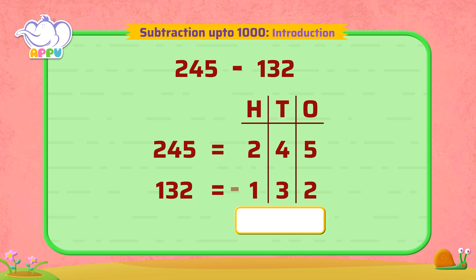We subtract ones first. 5 minus 2 is equal to 3. So 3 is in the ones place.